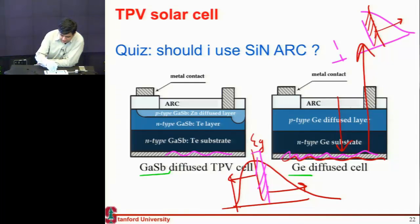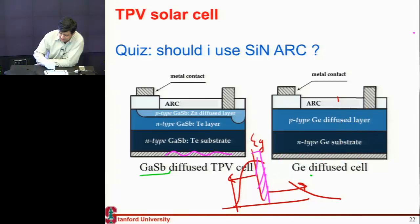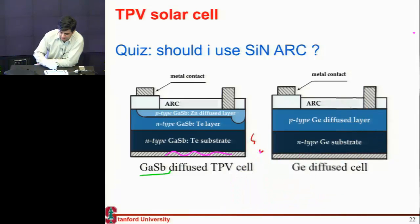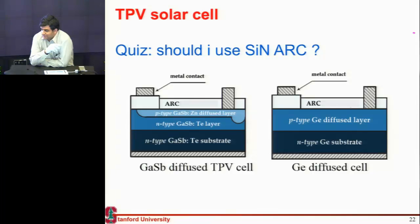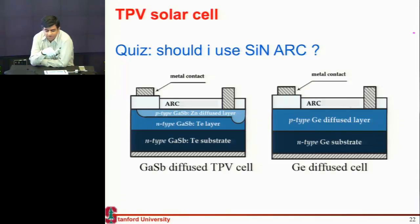Now the question I had for you: we talked about silicon nitride as an anti-reflective coating. You did a problem set simulation question where you put a silicon nitride coating. Should I use the same coating here? Would silicon nitride make a good coating for this cell? Remember your problem set where you optimized your silicon — problem set 3 — the simulation problem where you optimized your silicon nitride thickness. Should I do the same thing?